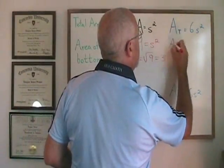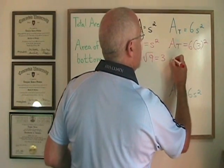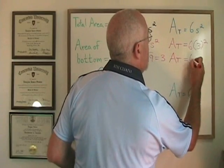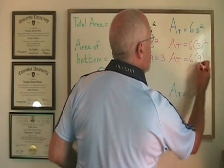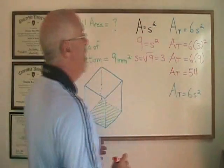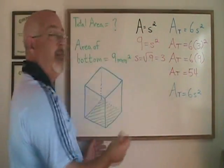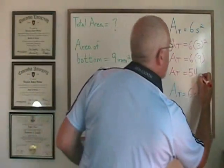I get AT equals 6 times 3 squared which is 6 times 9 which is 54. The unit of measure was millimeter squared so this is still an area, it will also have a unit of measure millimeter squared.